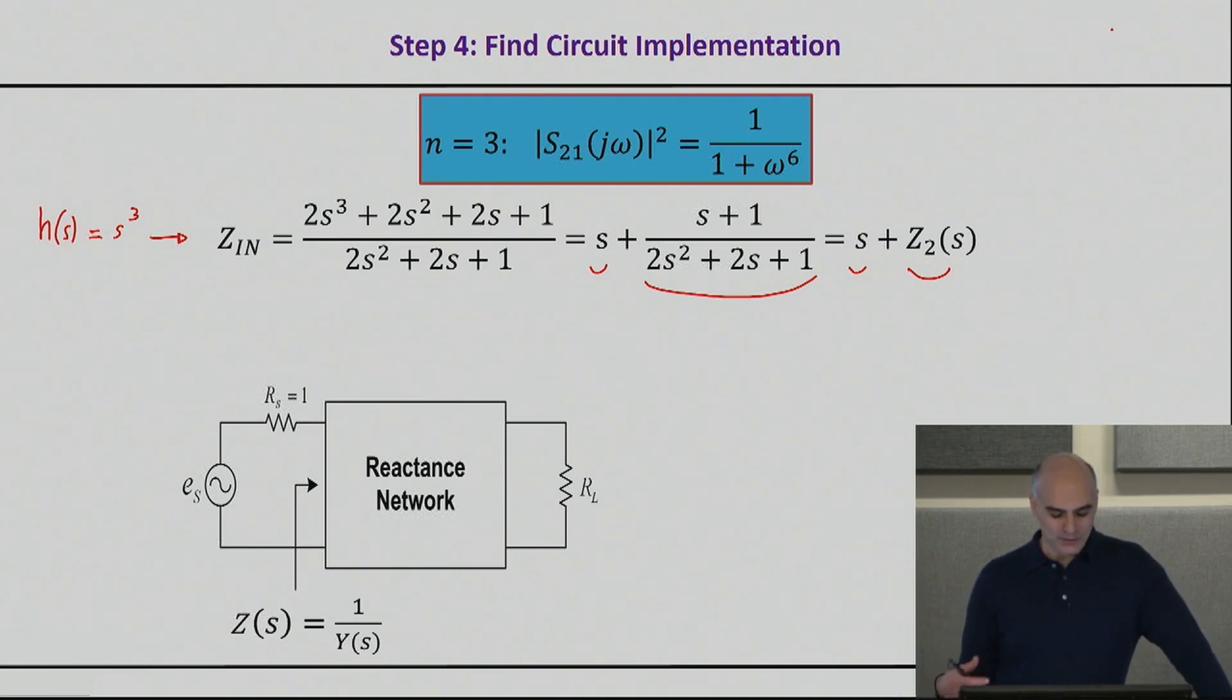So if I look from a circuit perspective, essentially what I'm implementing is a reactive network between my load and my source, and I'm working in the normalized domain at this point. What I mean by normalized domain is that my source impedance is assumed to be equal to 1 ohm. Later on I will scale this impedance to whatever value I want, and I'm also working with a frequency of 1.